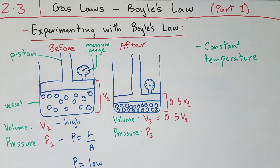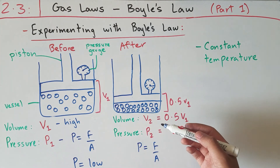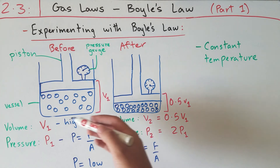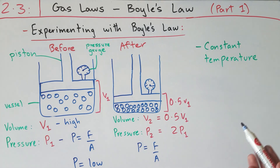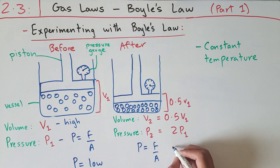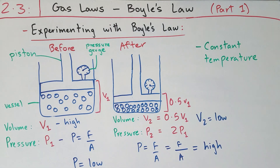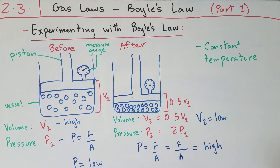If we decrease the volume of the gas by a factor of two, what happens to P2, the pressure after compression? The pressure P2 will be twice as much as P1, so it's going to be 2P1. Since we're not changing the temperature, the force exerted on the walls remains about the same. However, the area decreases, and since P = F/A, if area decreases the pressure will be high. So when we decrease volume from V1 to 0.5V1, pressure doubles to 2P1.